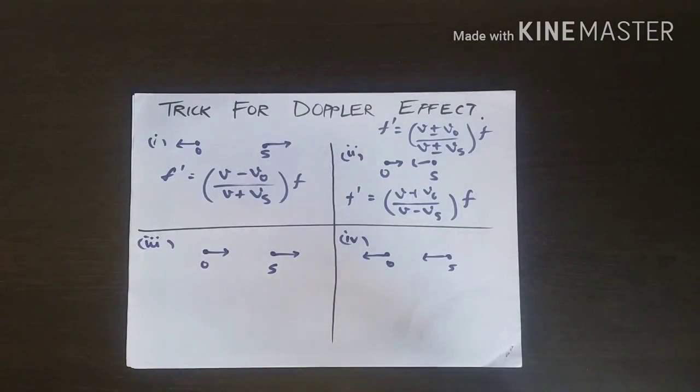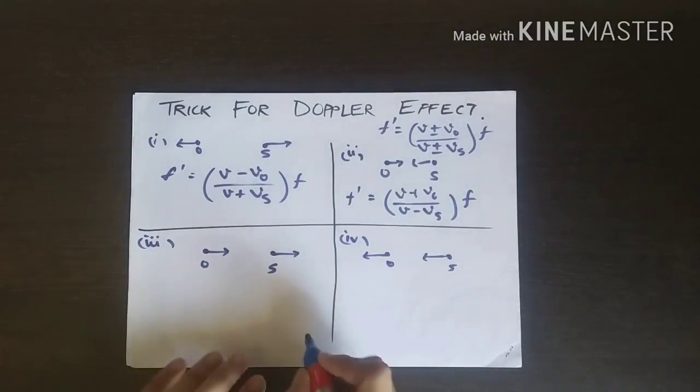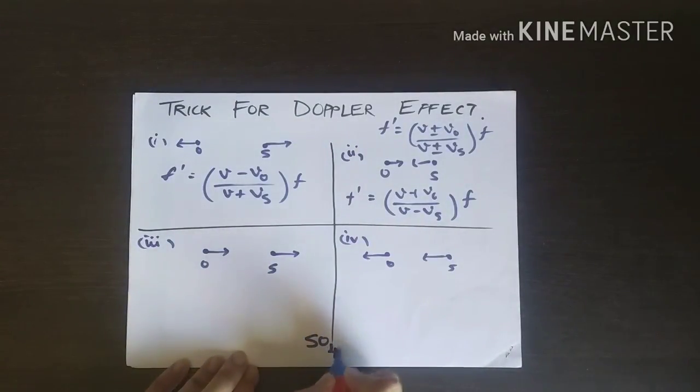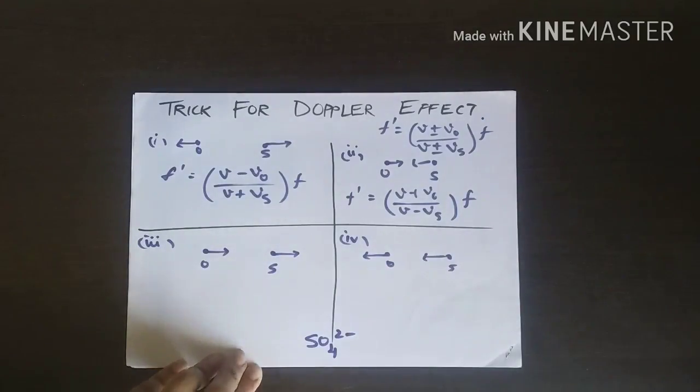What SO4²⁻ depicts is: source follows the observer, then negative sign has to come. That's what SO4 to negative says—source follows the observer, then negative sign has to come.